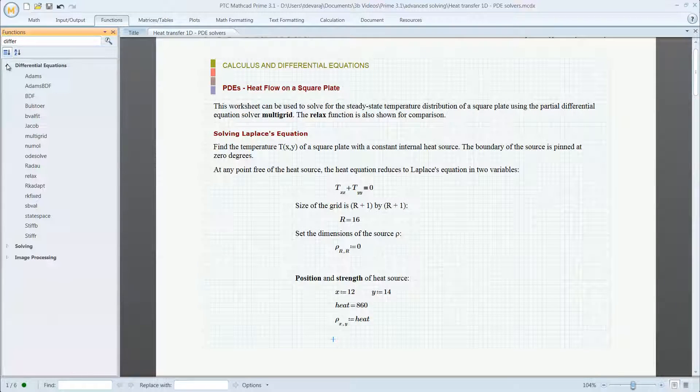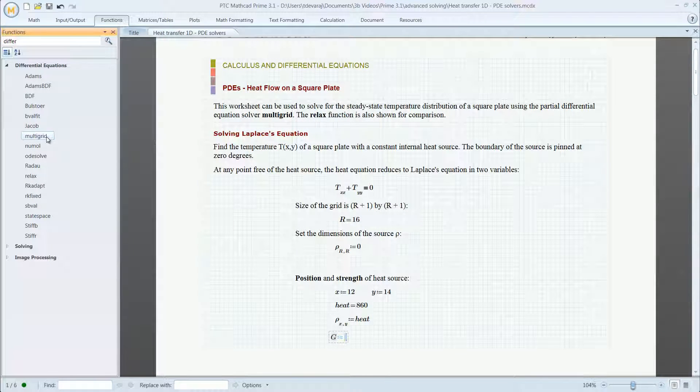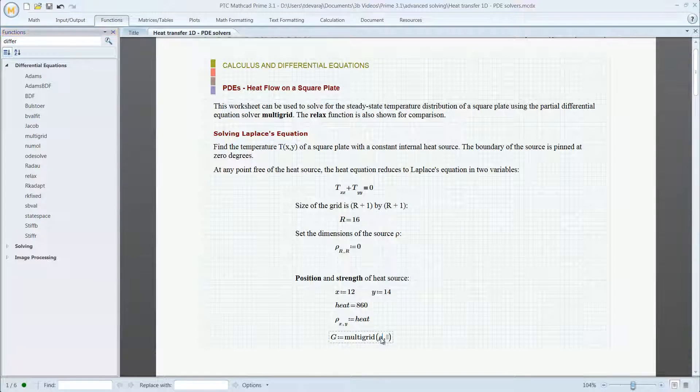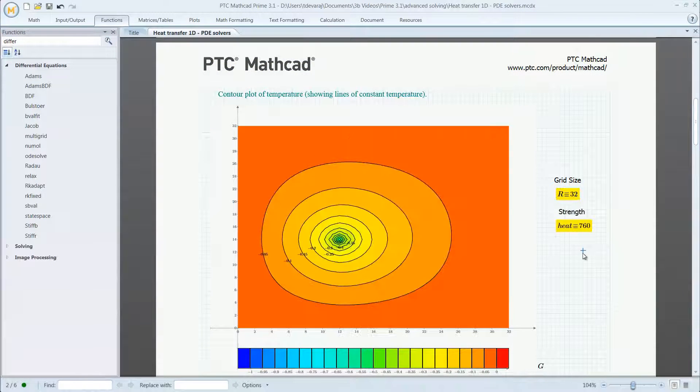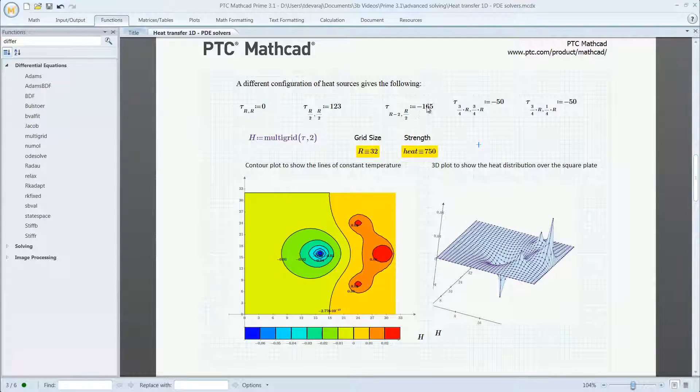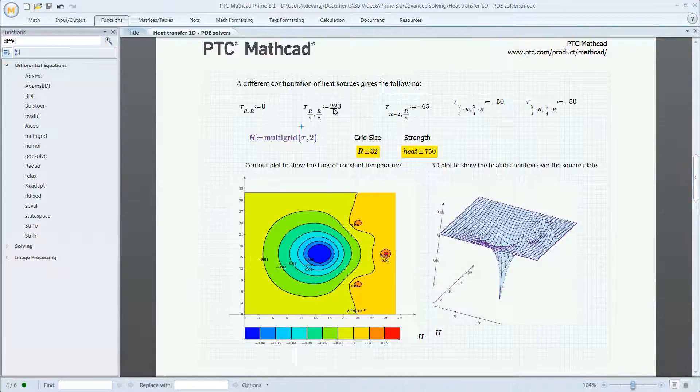Users can combine any number of functions to solve their most complex problems. For example, mechanical engineers can easily solve a one-dimensional heat transfer problem. By combining the partial differential equation solver with the multigrid function, engineers can easily determine the steady-state temperature distribution of the square plate.